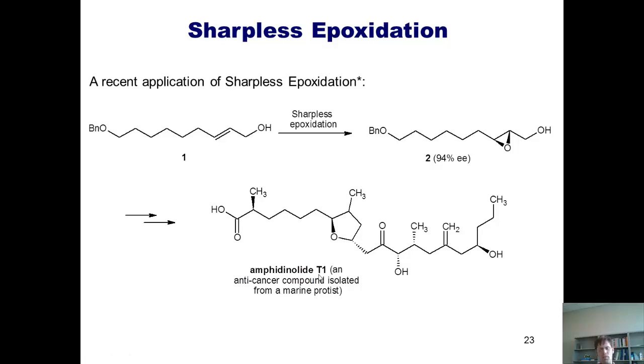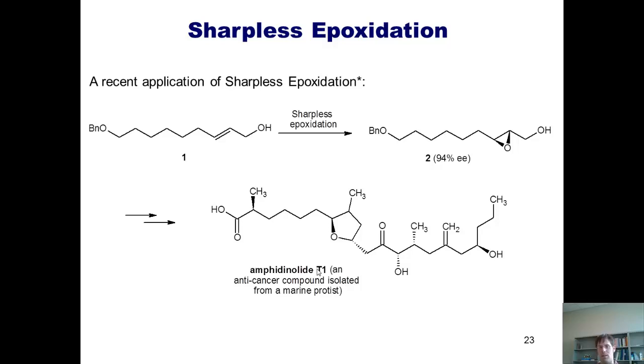And as I already mentioned, the sharpless epoxidation is a very useful reaction. In fact, to date, this is one of the few reactions that can be reproducibly done on an industrial scale to introduce chirality into a molecule. Much to your crapulent surprise, I'm sure, we still have a few more oxidation reactions to cover.